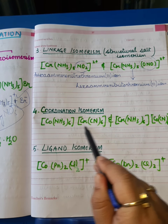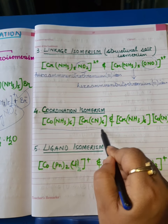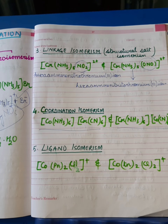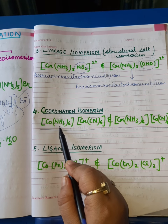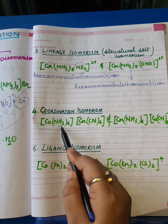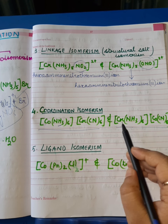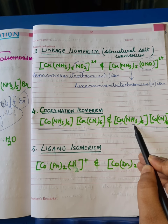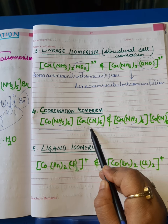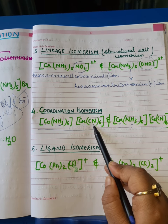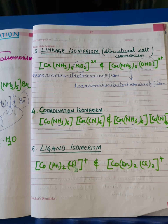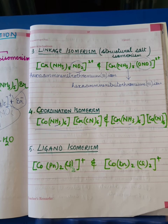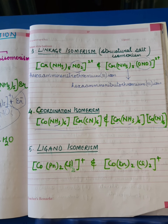Looking at two complexes that share the same molecular formula with the same components, the difference is in their coordination spheres. In the first complex, the positive sphere is composed of cobalt with amine as the ligand, and the negative ion is composed of chromium with cyanido as the ligand. In the second complex, the positive sphere is composed of chromium with amine as the ligand, and the negative ion is composed of cobalt with cyanido as the ligand. So in coordination isomerism, the complexes differ in terms of their ligands between the positive and negative ion spheres.